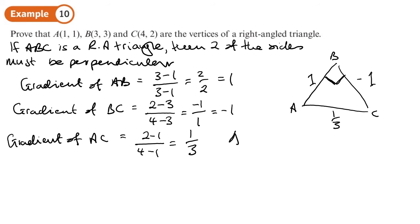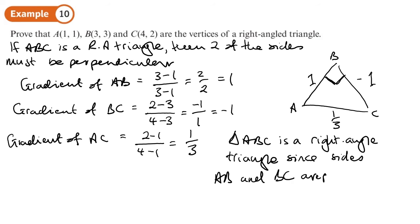Triangle ABC is a right angle triangle since sides AB and BC are perpendicular. I've got the working there to prove that the gradients of the two sides are perpendicular to one another. If we take these two gradients, the product of the gradients should be minus 1 and they are. If the product of the gradients is minus 1, that proves the sides are perpendicular.